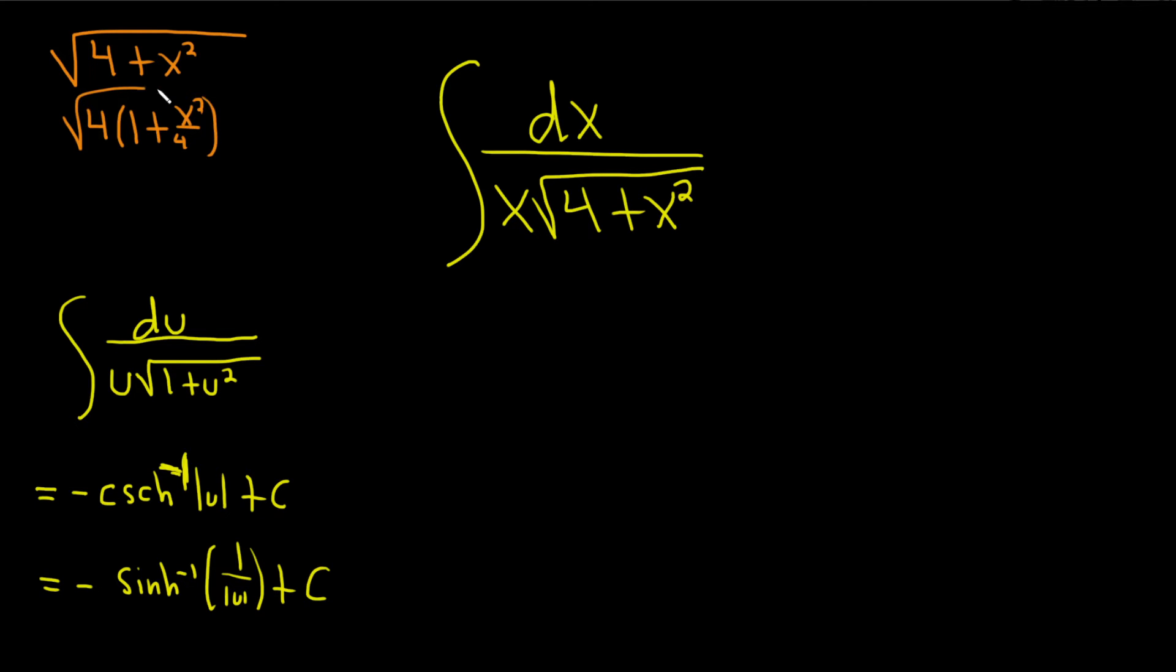So what we can do is we can pull out a 4 and write this as 1 plus x squared over 4, just like that. Really clever, right? It's really cool. And then we can break this up into two square roots. So this is the square root of 4 times the square root of 1 plus x over 2 quantity squared. And that's just going to become a 2.